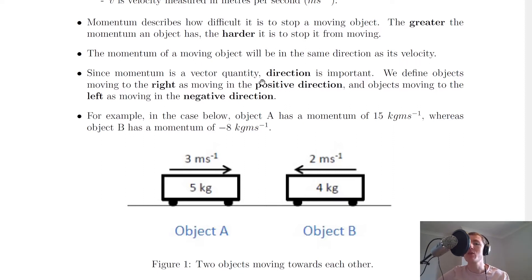Since momentum is a vector quantity, direction is important, we've already seen that. We define objects moving to the right as moving in the positive direction, and objects moving to the left as moving in the negative direction. Now this is the sign convention that you've actually seen before when we did motion time graphs.